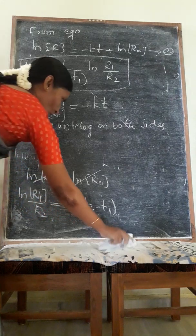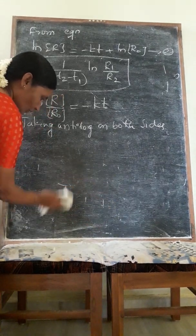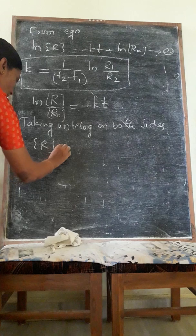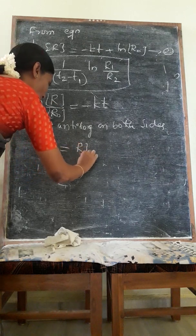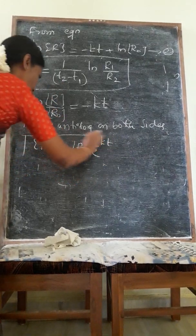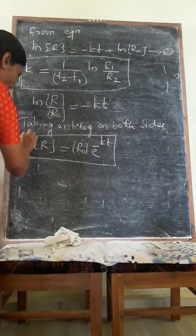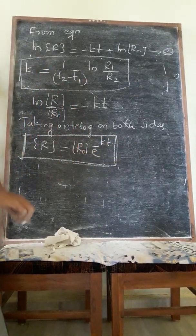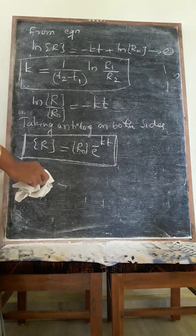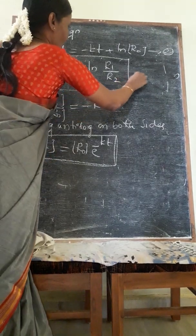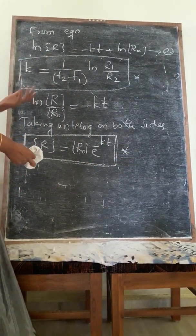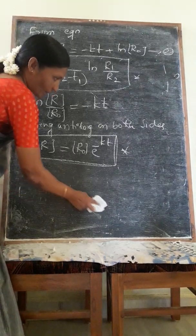R equals R naught e raised to power minus k into t. This is another new equation used for calculating concentration when R naught is given in exponential form. These are special type of equations. These are not the actual derived form, but rearranged equations.